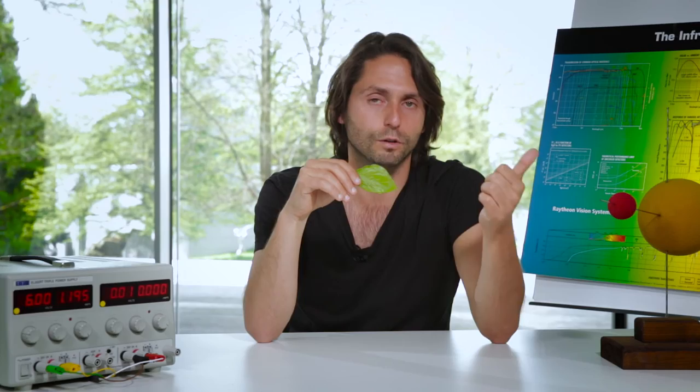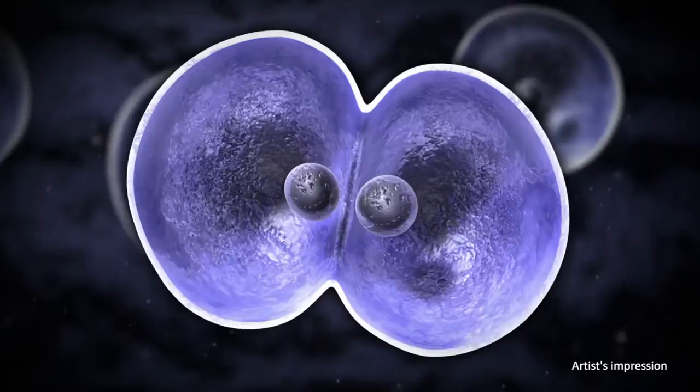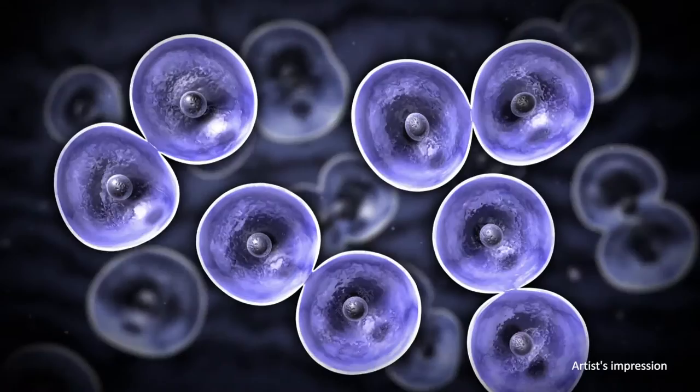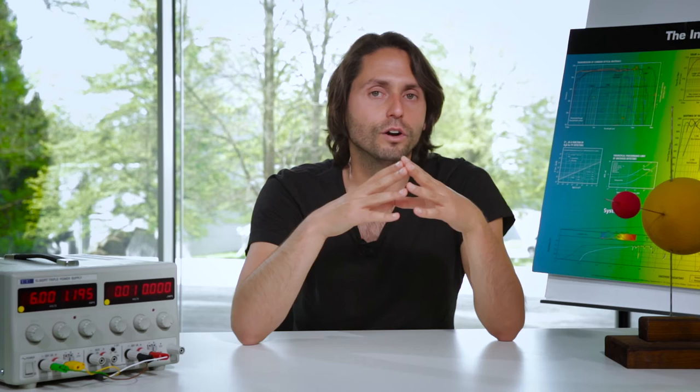Life could also exist under different conditions. Oxygen is not necessary for life — life existed long before oxygen was formed. The early atmosphere of Earth consisted of carbon dioxide, methane, water, and nitrogen, but no oxygen, and life existed there.